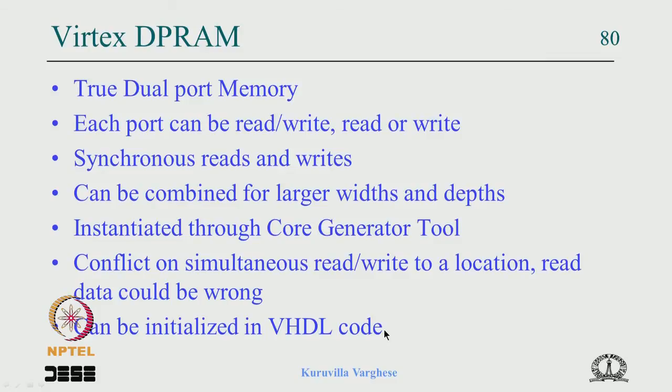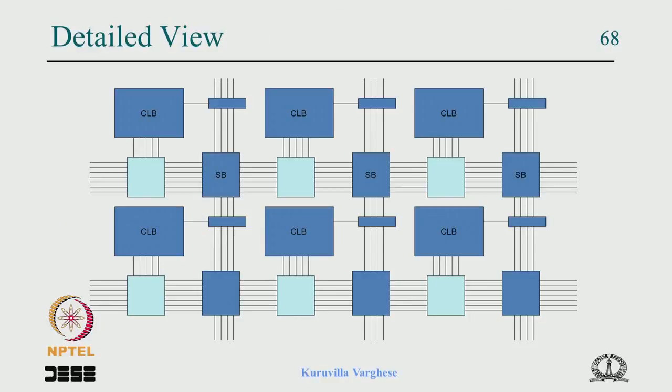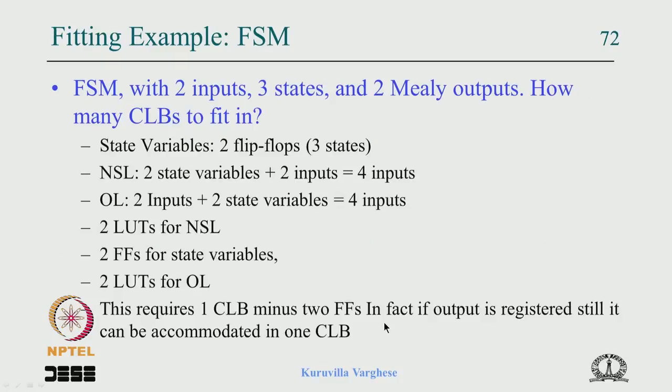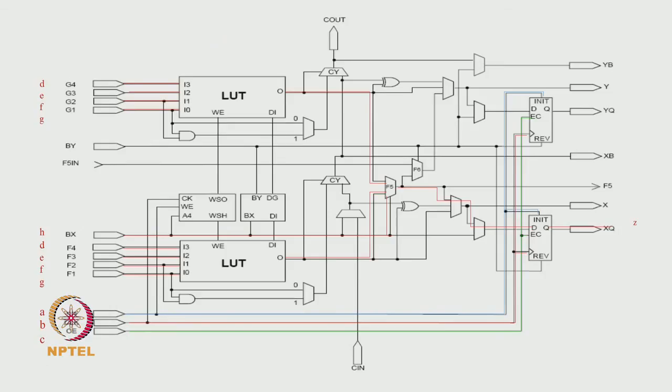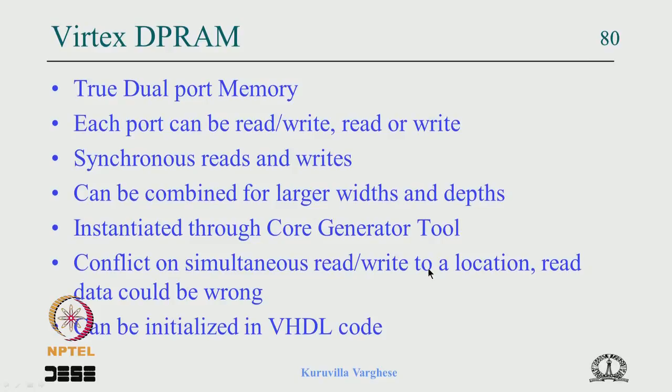In today's lecture we covered the carry chain and how it implements fast adders, how sequential circuits and FSMs map to the CLB, the IO block with the weak keeper and tri-state bus lines, resource estimation examples for an FSM and an 8-bit counter, VHDL-to-CLB routing for a specific code example, and block memory usage. In the next lecture we will look at FPGA configuration. Thank you.